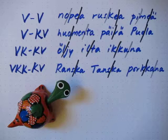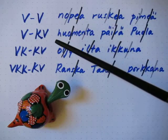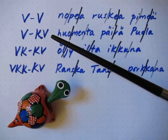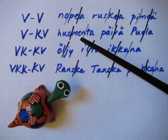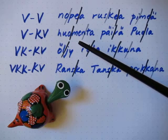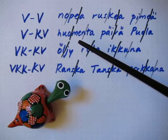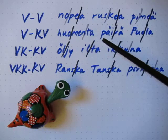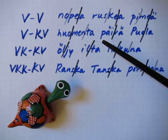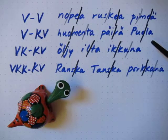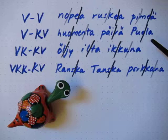Next we have vokaali and konsonantti-vokaali. Here we see the example words: huomenta, päivää, puola.